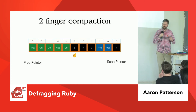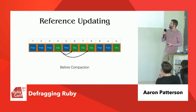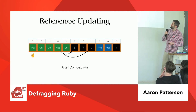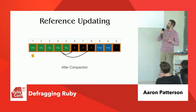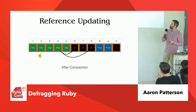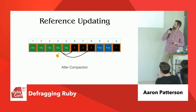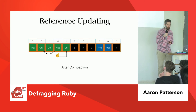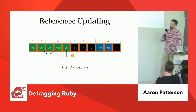Next, we have to actually update references. If we have objects pointing at each other, after everything is compacted we need to update those addresses. So we scan through the heap again, looking for objects that have references and updating those references to point to the new locations. We scan through, and then we're done.